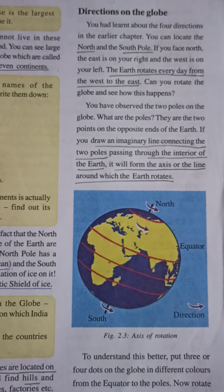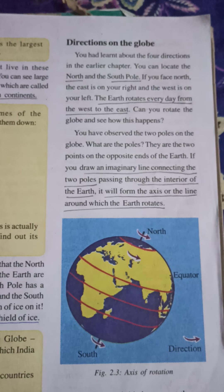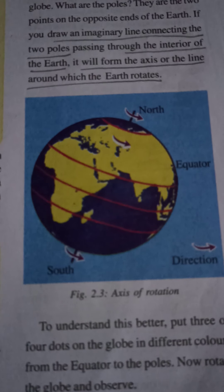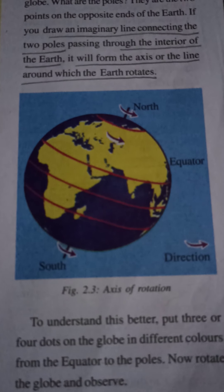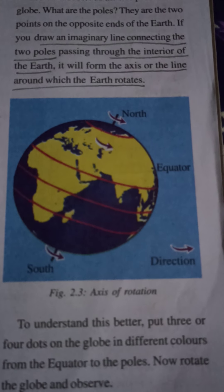Now we are going to learn about directions on the globe. For knowing about the direction on the globe, we need to know about the poles. The Earth constantly rotates or turns on the axis of rotation. This axis is an imaginary line passing through the Earth that points North and South. The Earth has two poles. The northernmost point is called the North Pole. The southernmost point is called the South Pole. In the given picture, we can see the northmost point is known as the North Pole and the southmost point is known as the South Pole. The Earth always rotates from West to East direction.